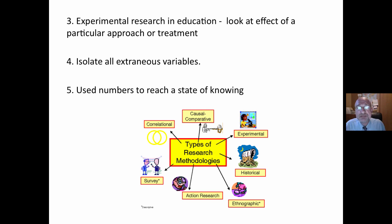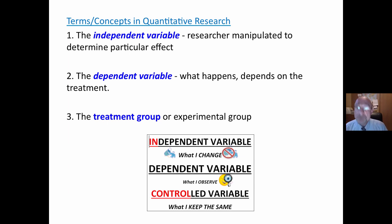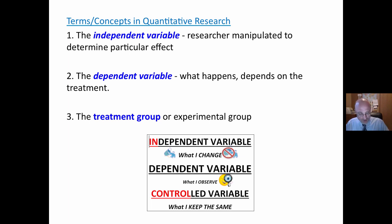It is a cause-effect paradigm used to make sense of the world. Important terms in quantitative research: The independent variable is the treatment or factor that the researcher manipulates to determine the particular effect of something. It is what is done or not done to a group of people or classes. The dependent variable is the particular effect or result of the treatment. An easy way to remember the distinction is to think of the dependent variable as depending on the treatment or independent variable — depending on this, that happens.